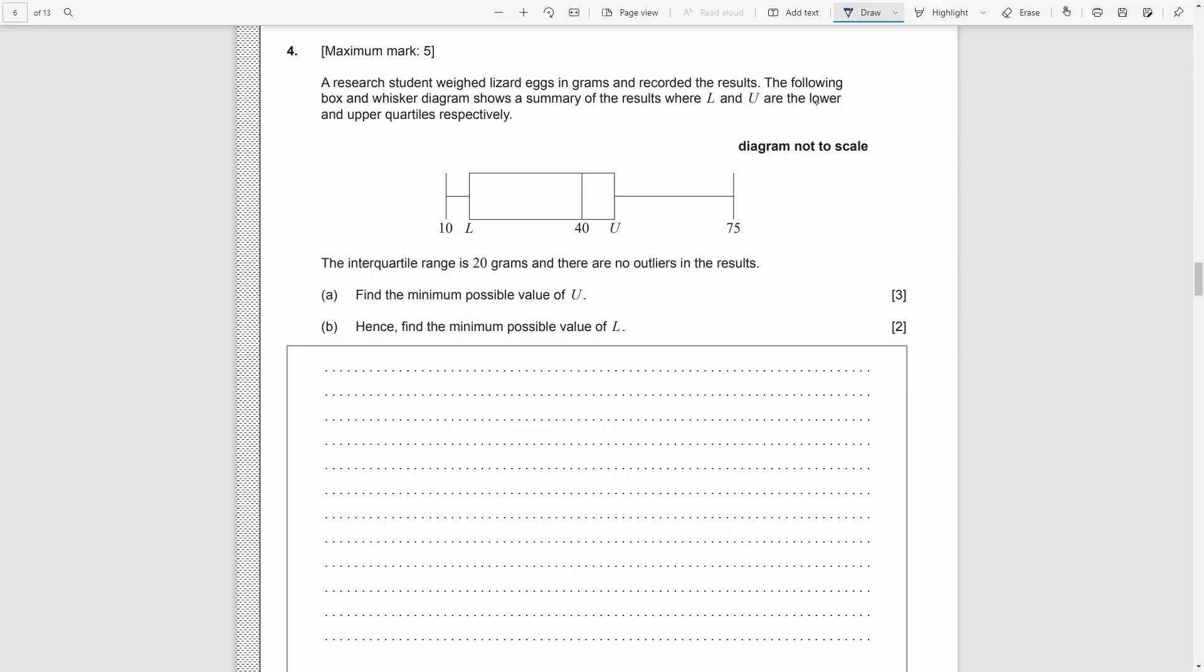Question 4. Here is a box and whisker diagram. Lower quartile and upper quartile are unknowns, but minimum, median, and maximum are given. The interquartile range is 20, and there is no outlier. Part A. We need to find the minimum possible value of the upper quartile. As there is no outlier. The maximum, 75, must not be greater than the upper bound of the data.